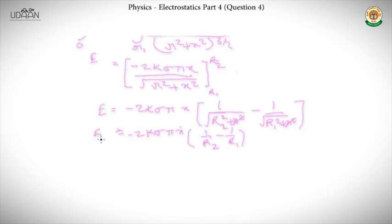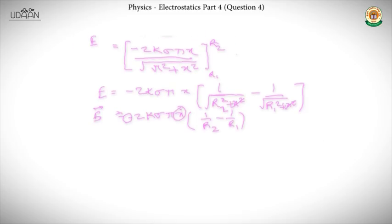Electric field E is proportional to x, which implies force is proportional to x. We also have a negative sign. Whenever force is directly proportional to minus x, the motion is simple harmonic. So in this case the motion will be simple harmonic motion.